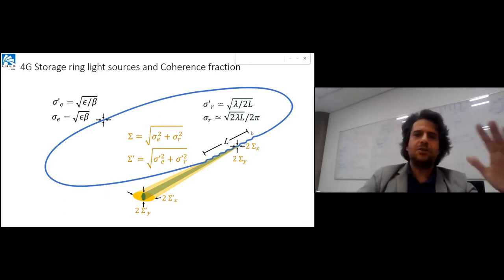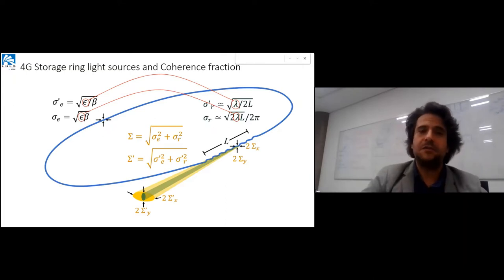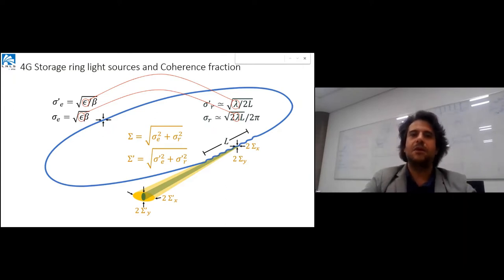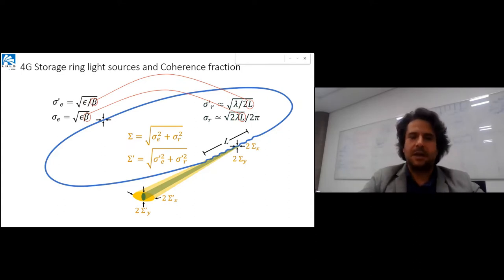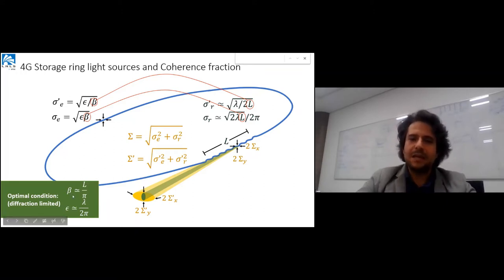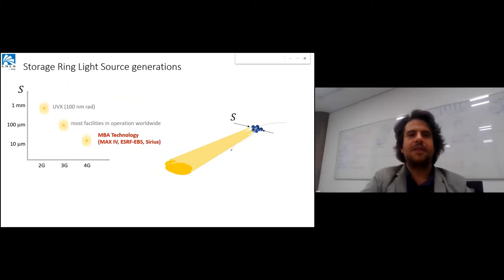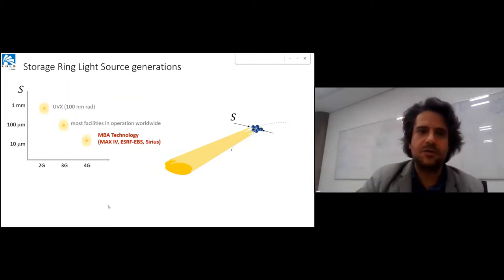The major challenge, given a certain wavelength, is matching the emittance to the desired wavelength. For hard x-rays, in the range of 100 nanometer radians, and also matching the beta functions to the length of the undulator. When we match these conditions, we reach diffraction limited for this wavelength and can extract coherent radiation from the source.